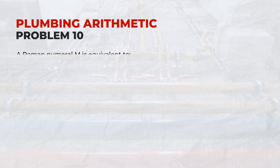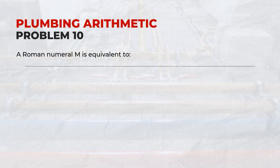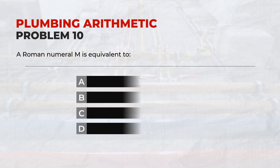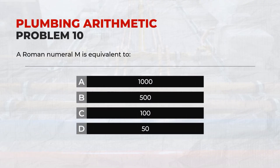A Roman numeral M is equivalent to: Answer: A. 1,000.